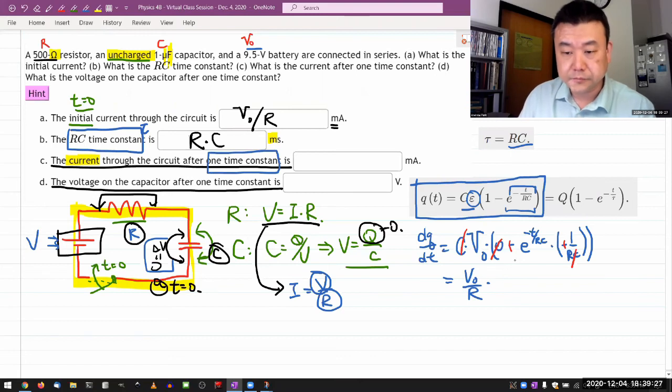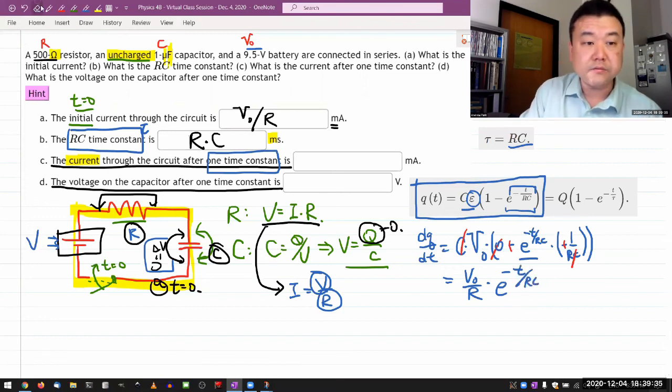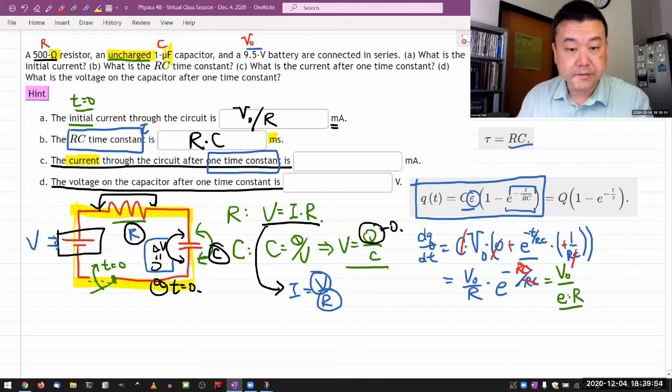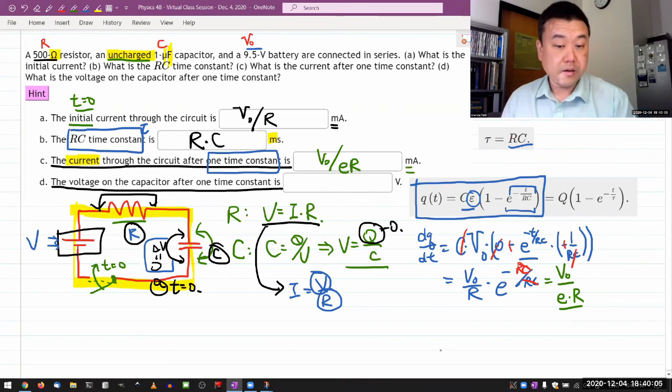And because it says one time constant, you'll have to write down this, E to the minus T over RC. And imagine writing down T is equal to RC. And when you do that, RC over RC cancels out. So it's E to the power of minus one. So this whole thing simplifies down to V naught over Euler's number times R. That's it. That's the current. When you plug in those numbers, get an answer that's going to be in amperes. Make sure you watch the units.